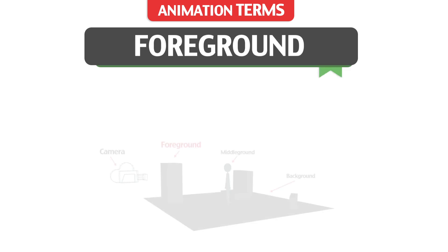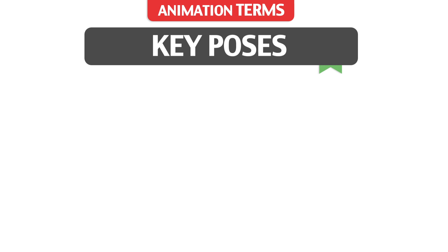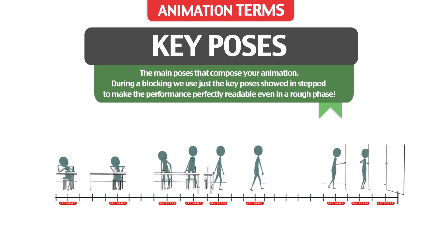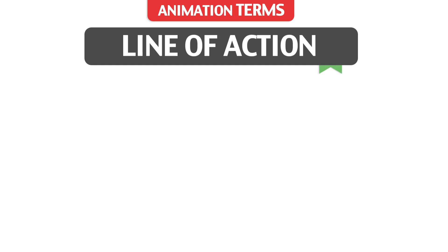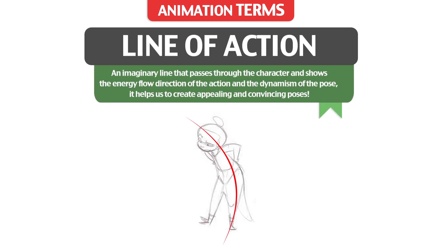Foreground: the element in the frame that appears nearest to the camera. Key Poses: the main poses that compose your animation. During a blocking, we use just the key poses, showing this step to make the performance perfectly readable even in a rough phase.